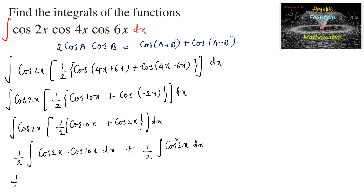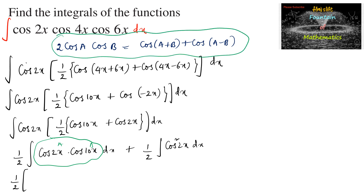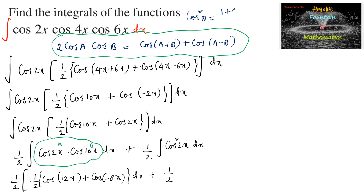We can apply the cosA·cosB formula again to the first integral. With a = 2x and b = 10x, we get (1/2)[cos(2x+10x) + cos(2x-10x)] = (1/2)[cos(12x) + cos(-8x)]. For the second integral, we use the identity cos²θ = (1 + cos(2θ))/2, giving us ∫(1 + cos(4x))/2 dx.